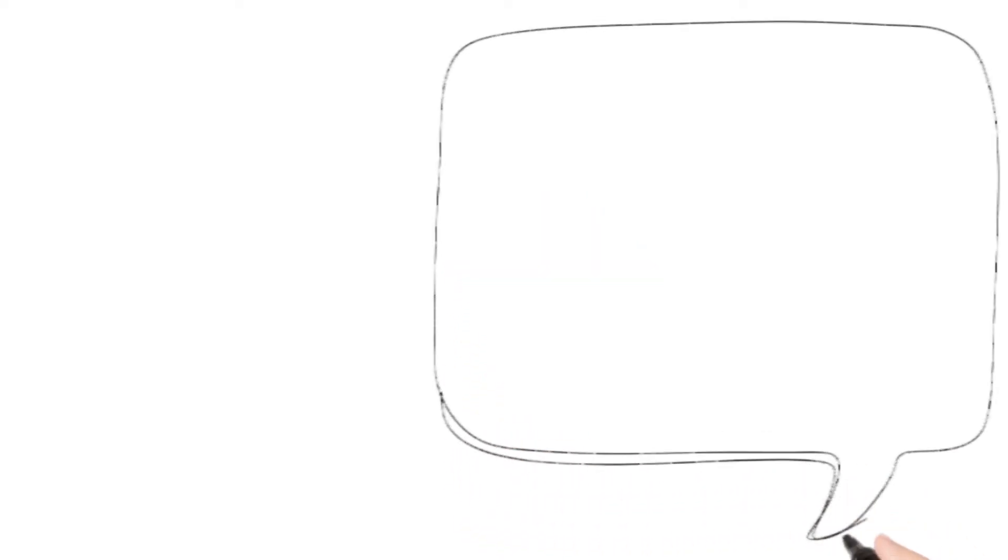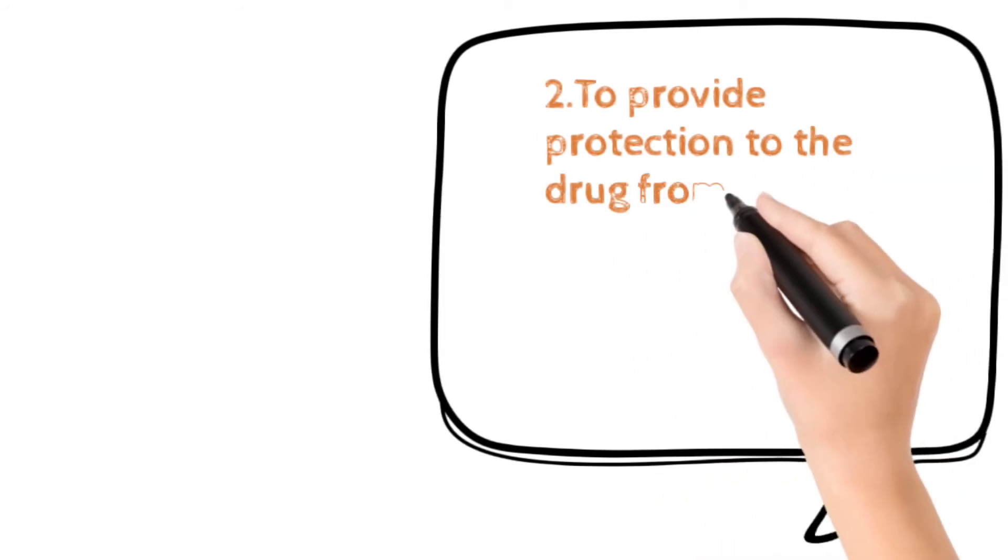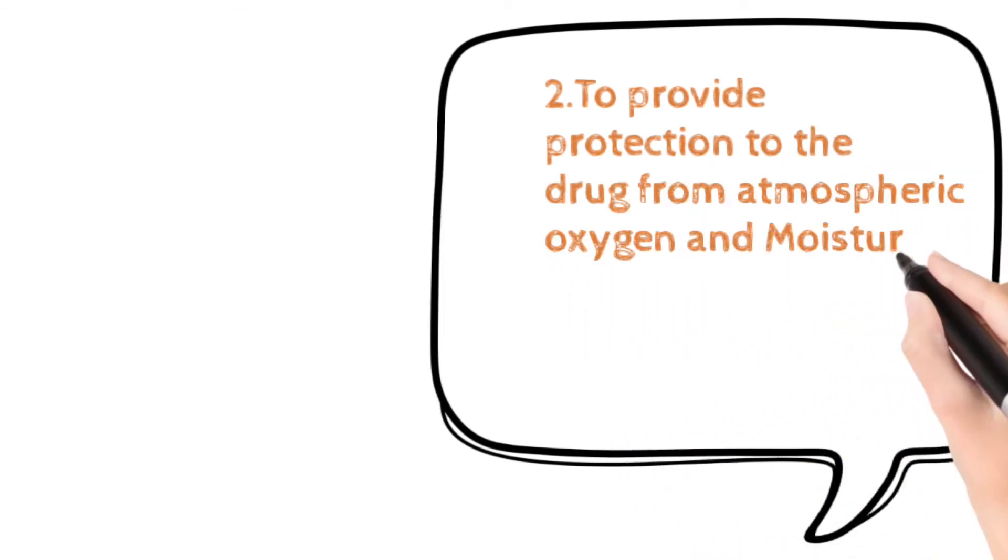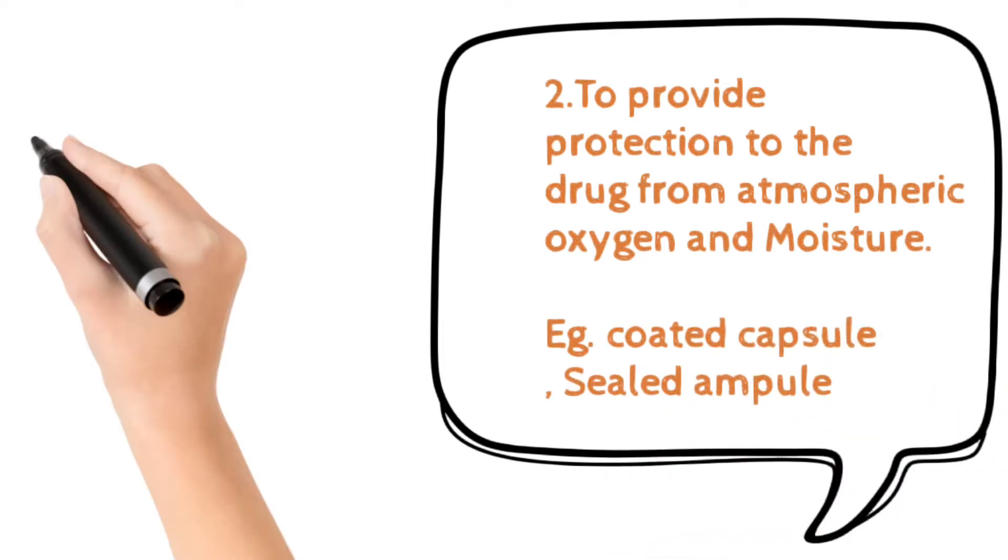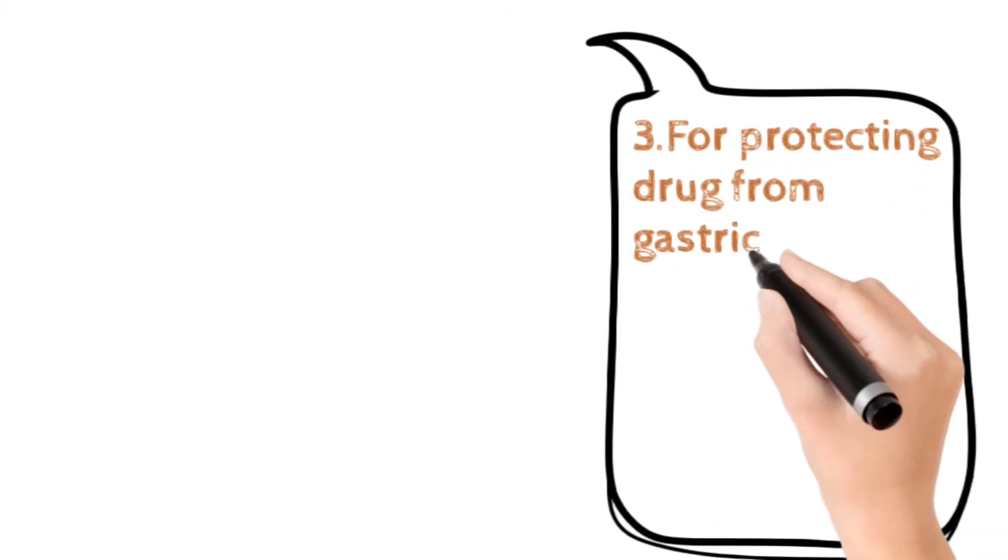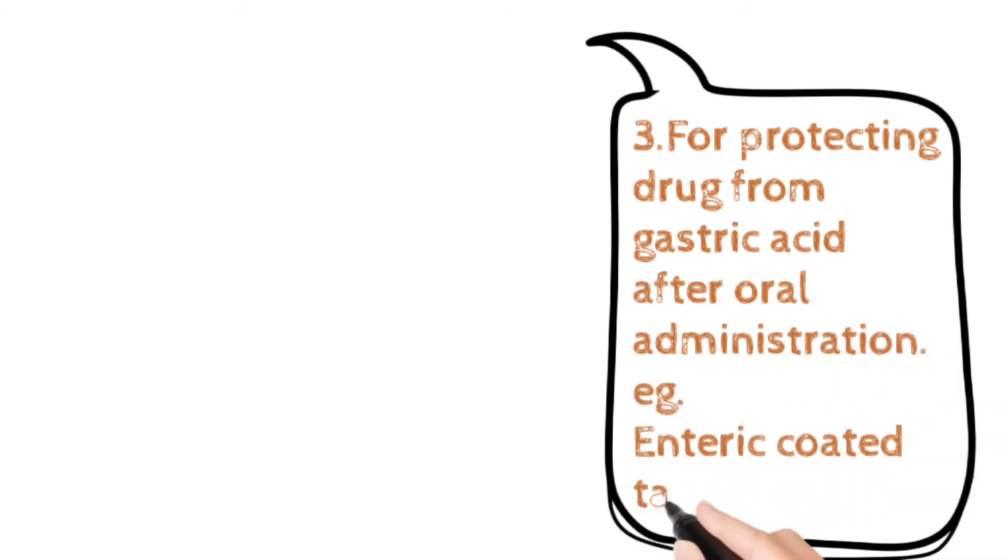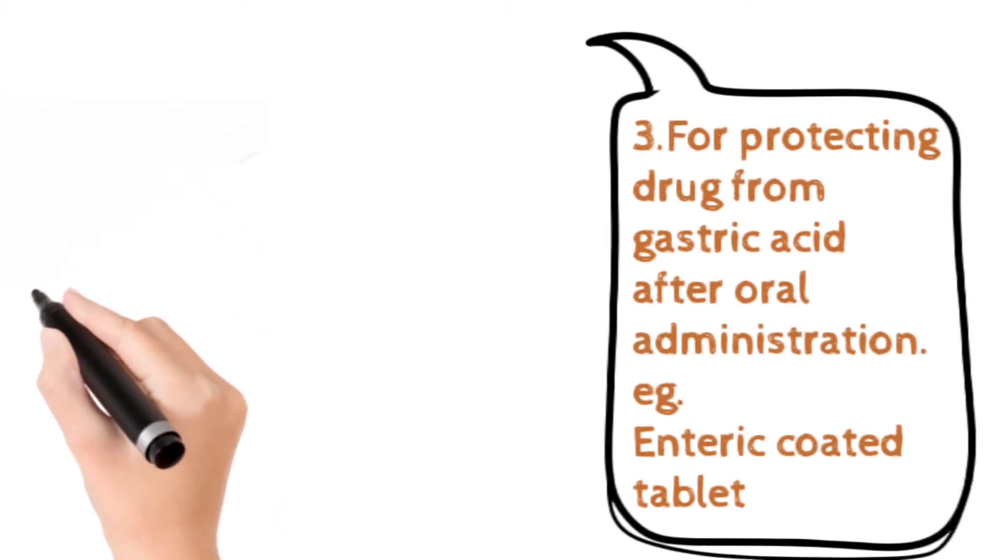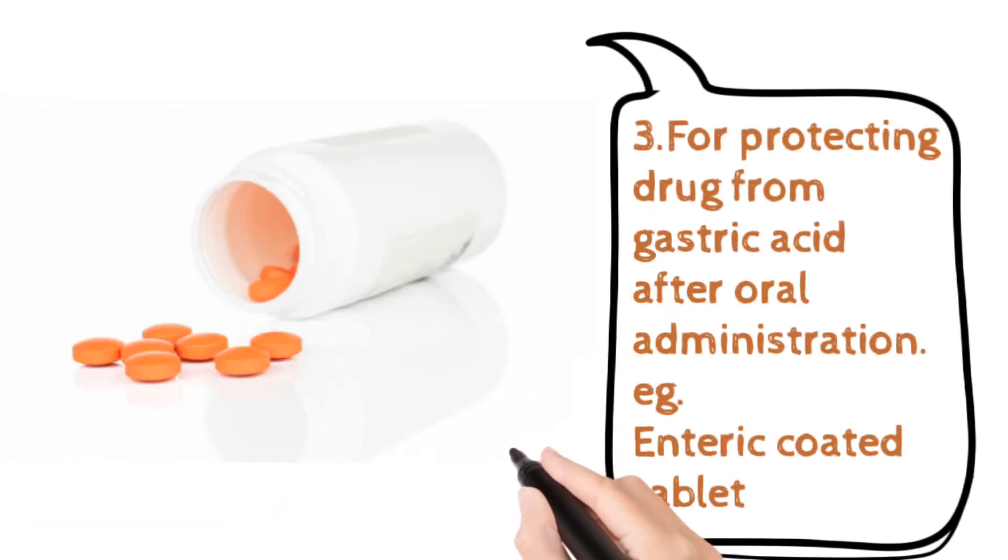Next one is to provide protection from various environmental factors like atmospheric oxygen and moisture. If the drug is absorbing oxygen from the environment, it can cause oxidation. If it is absorbing moisture, it can cause softening of that drug. Therefore, coated tablets and sealed ampoules are used to protect the drug. Third is for protecting drug from gastric acid after oral administration. If the drug deteriorates after oral administration, then it is not of use. Therefore, coated tablets are used to protect drug from gastric acid so they can go into the intestine and show action.